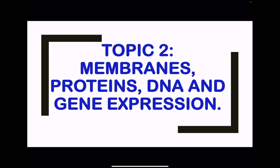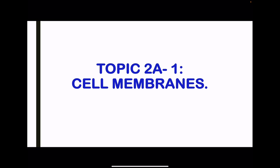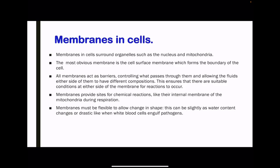In this video, we're going to be looking at topic 2A. Topic 2A1 begins with cell membranes, where we're going to be looking at the functions as well as the components of the cell membrane. Cell membranes include the membranes surrounding organelles as well as the cell surface membrane. The cell surface membrane is the most obvious cell membrane because it forms a boundary around the whole cell.